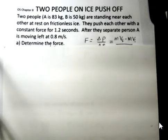Person A, 83 kilograms of mass, person B, 50 kilograms of mass. They're standing near each other at rest and they're on frictionless ice.